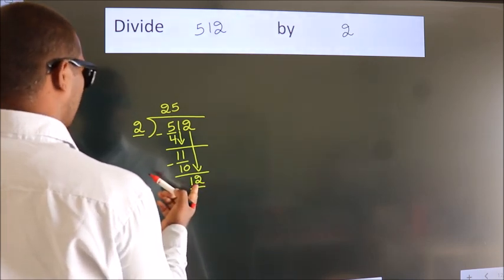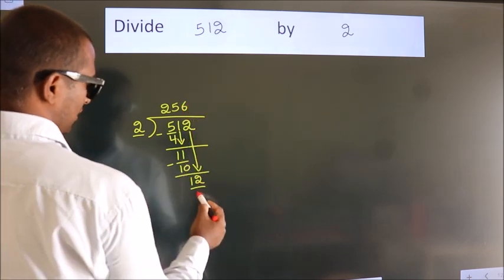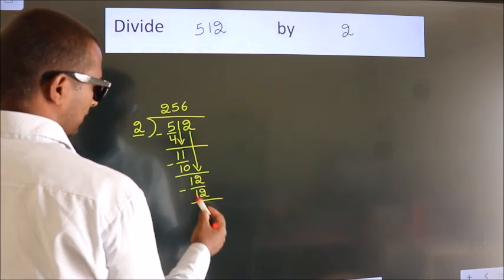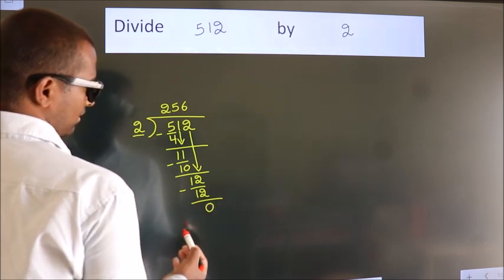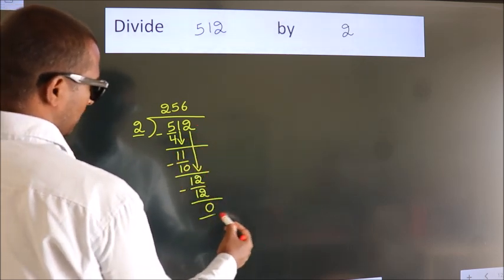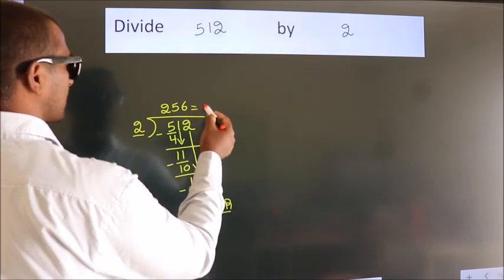When do we get 12 in 2 table? 2 6, 12. Now we subtract. We get 0. No more numbers to bring it down. So we stop here. This is our remainder. This is our quotient. See you soon.